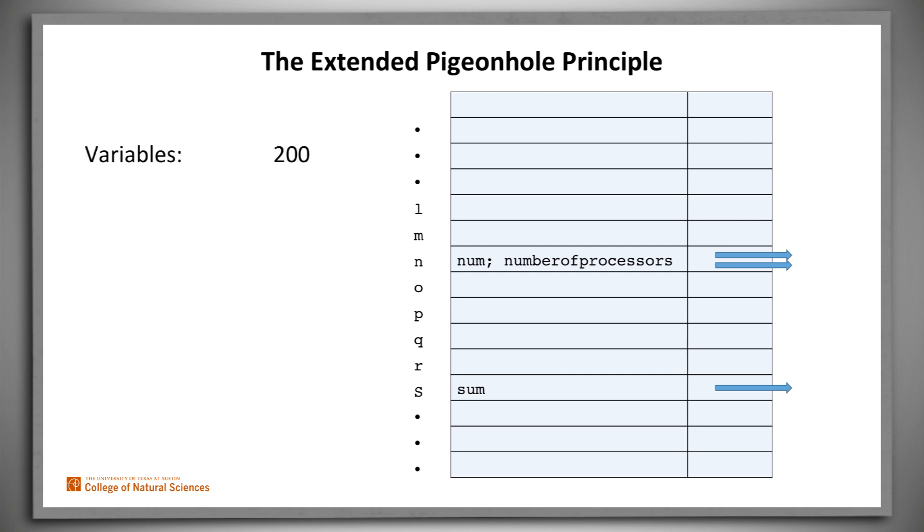Suppose that we expect that a reasonable program could use, say, 200 variable names. And let's allow for the 10 digits, as well as the 26 letters, so we'll use 36 boxes. Then we have that some box must contain how many variables?